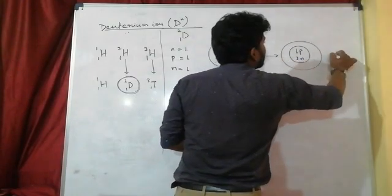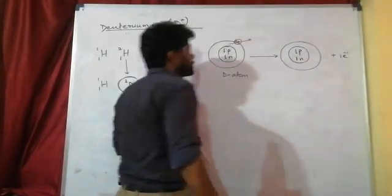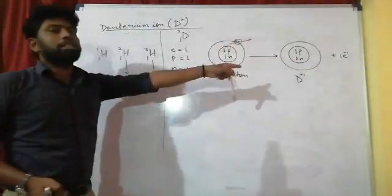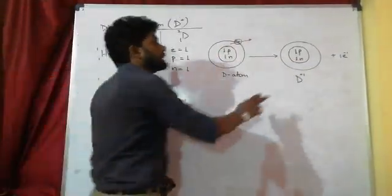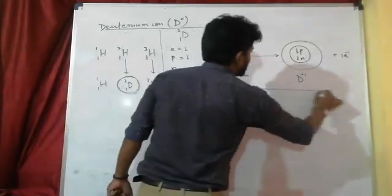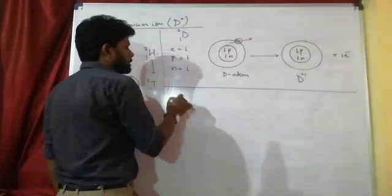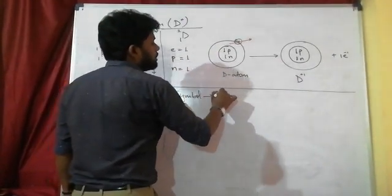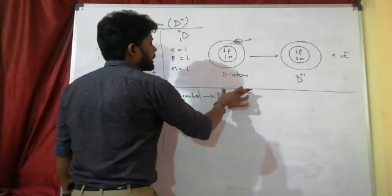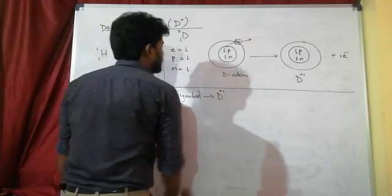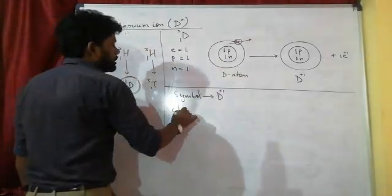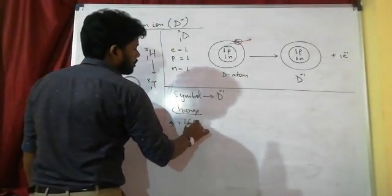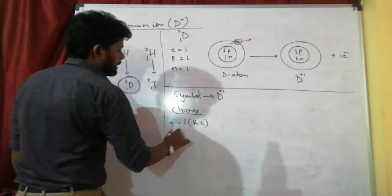Now, to form Deuterium Ion from the Deuterium atom, we eliminate this electron. So after eliminating the electron, we have 1 proton and 1 neutron remaining. The Deuterium atom becomes Deuterium Ion - D plus, or D with a 1 plus charge. The symbol of Deuterium Ion is D+ or just D plus. It has a plus 1 charge.